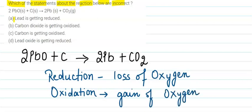The first statement says that lead is getting reduced. However, in the reactant side we have lead oxide, not lead — so it is lead oxide that is getting reduced, not lead itself. Therefore, this statement is incorrect.